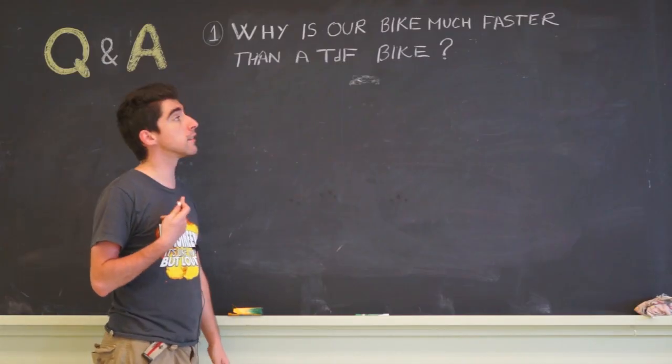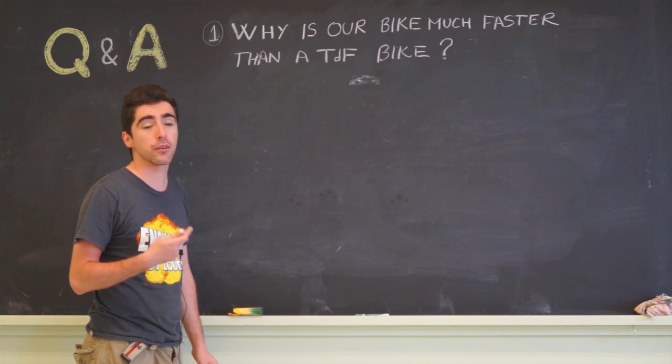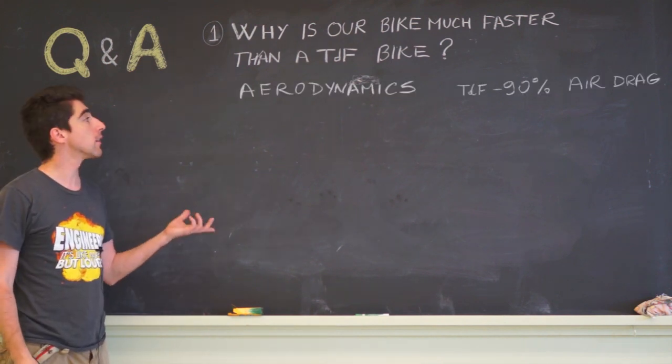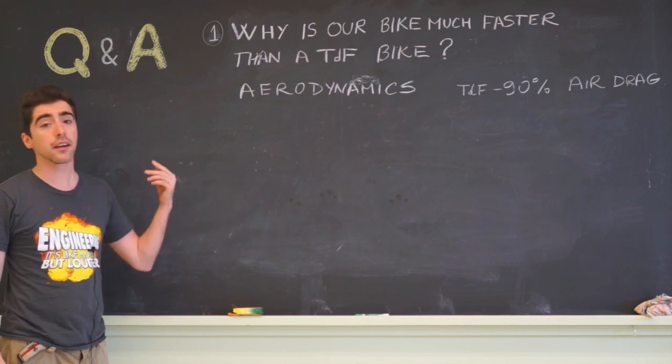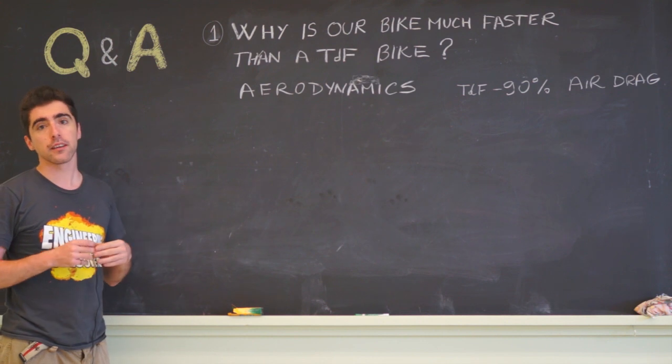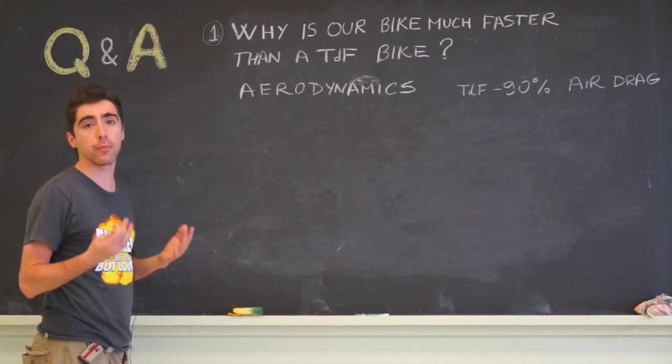So why are our bikes much faster than the Tour de France bikes used by professional riders? The short answer is aerodynamics. A Tour de France bike loses 90% of the energy of the rider into air drag. We have to understand why they are so bad and how we can do better.